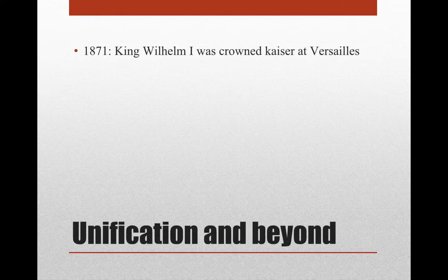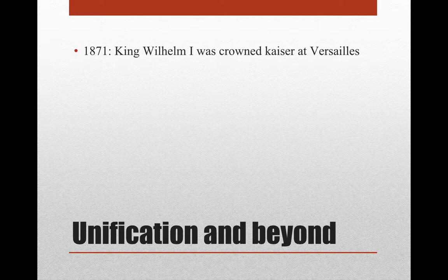So in January of 1871, King Wilhelm I was crowned Kaiser at Versailles. We'll be using the word Kaiser a lot when we get to World War I. And Versailles — you probably remember — is the royal palace of the French people, where King Louis XVI and Marie Antoinette lived. So this is where Wilhelm chose to be crowned Kaiser of the newly unified Germany. You can see they were kind of rubbing it in to the French that the Germans had won.